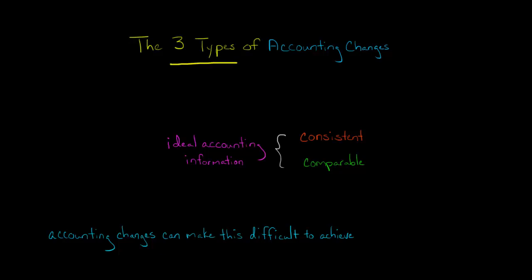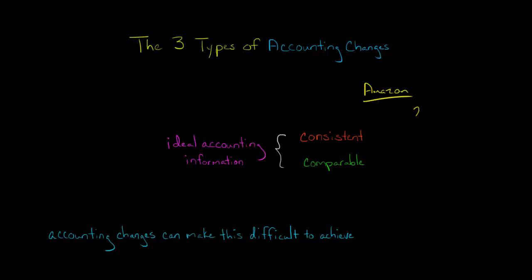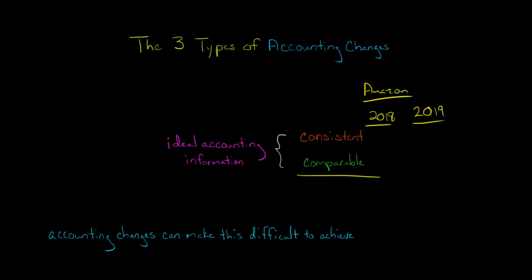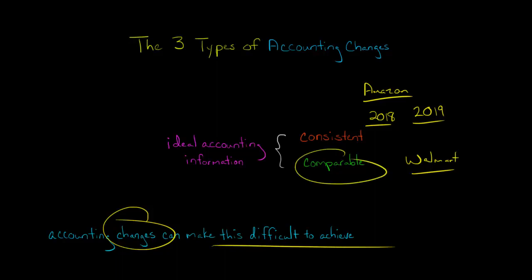In this video, we're going to discuss the three types of accounting changes. Accounting information should be both consistent and comparable. For example, Amazon.com's 2019 fiscal year financial data should have been prepared using the same accounting rules and principles as their 2018 fiscal year — that's consistency. Comparability means that when comparing Walmart's financials to Amazon's, they were prepared using the same basic rules and principles. However, sometimes accounting changes make these objectives difficult to achieve.